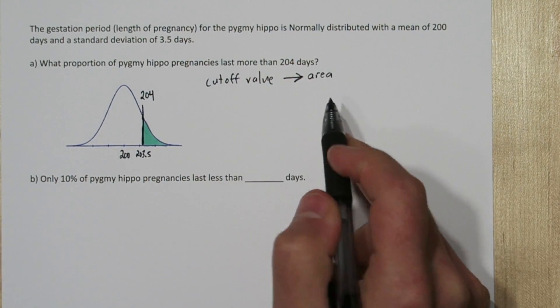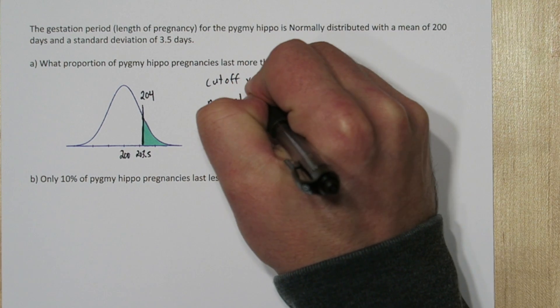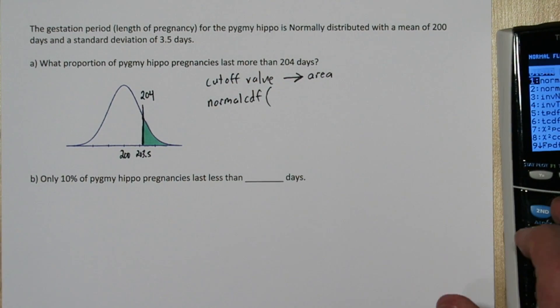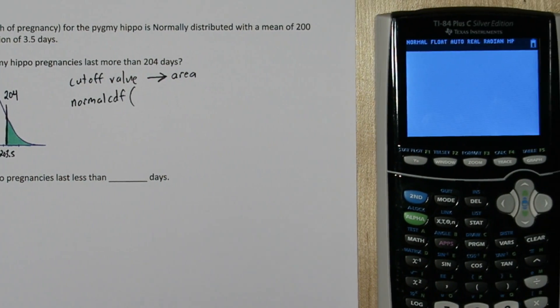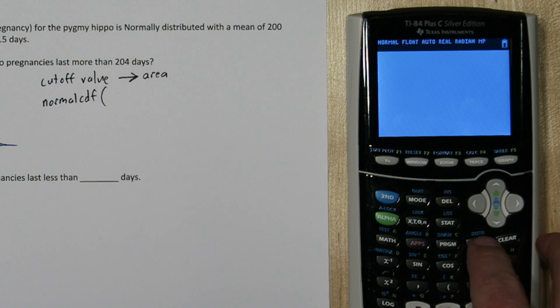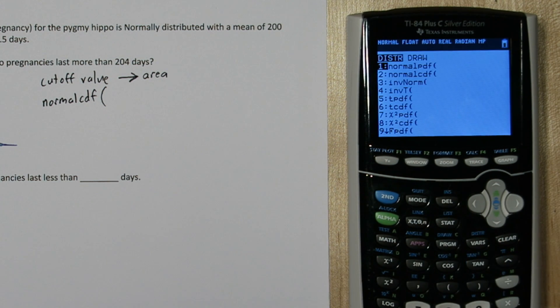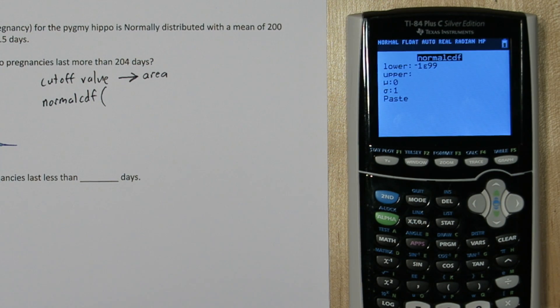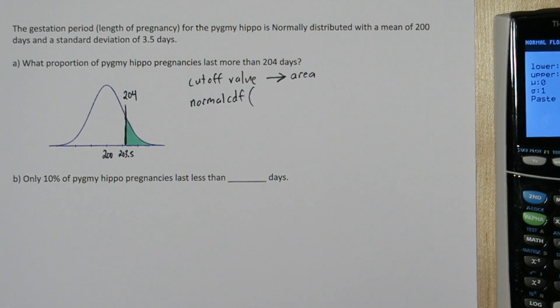If you have the cutoff value and want to find the area, use the normal CDF function on the calculator. To use it, press 2nd, Vars, this is our distribution menu. Go to normalCDF, and it's going to say, what's your lower limit? In this case it's 204.